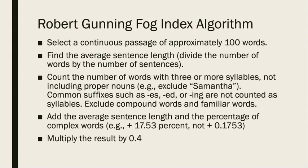The Robert Gunning Fog Index algorithm is somewhat complicated when you first look at it. We take a continuous passage of approximately 100 or more words. Then we find the average sentence length by dividing the number of words by the number of sentences. We count the number of words with three or more syllables, not including proper nouns — for example, we would exclude words like 'Samantha.' Common suffixes such as -es, -ed, or -ing are not counted as syllables, as they're very common. We also exclude compound words and familiar words.